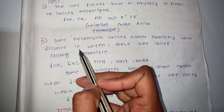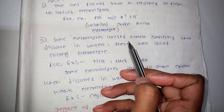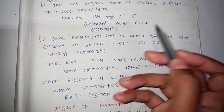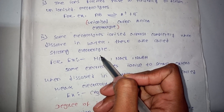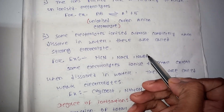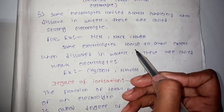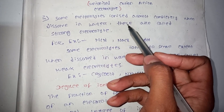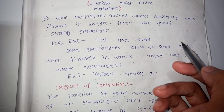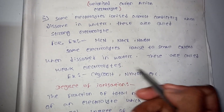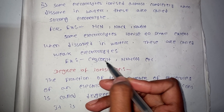Electrolytes that ionize almost completely when dissolved in water are called strong electrolytes. Examples include NaCl. Electrolytes that ionize only to a small extent are called weak electrolytes. Examples include CH3COOH (acetic acid) and NH4OH.